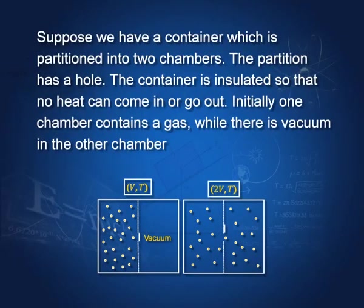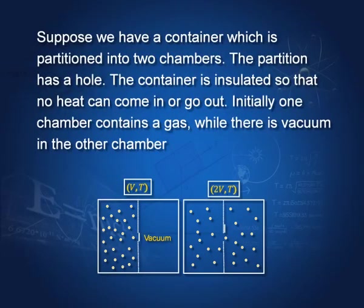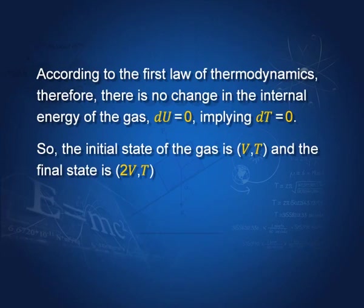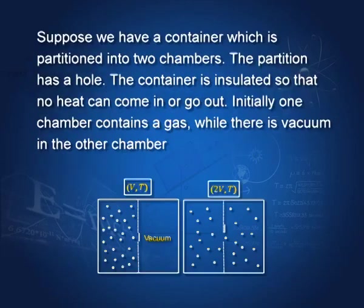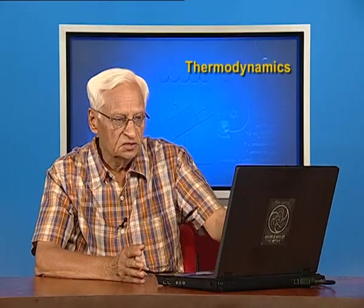Take another example. Suppose we have a container divided into two chambers. Initially, the gas is confined to one half and the other half has vacuum. There is a partition with a block. I remove this block — what happens? The gas flows into the vacuum chamber. Since it flows into vacuum, it does no work because there is no pressure. Therefore P·dV equals zero, and there is no change in temperature or internal energy. The initial state is V, T and the final state is twice the volume at the same temperature. If I want to press this gas back into the original chamber, that is not possible without help from outside. Therefore, this process is irreversible — we cannot recover the original state.